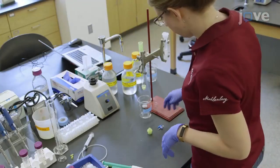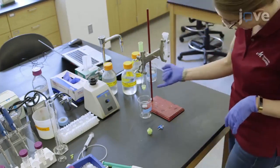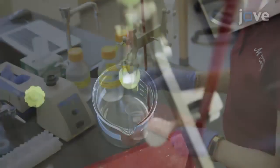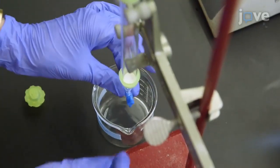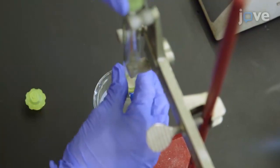To begin this procedure, obtain a 1.5 by 20 cm column equipped with a luer lock outlet, an upper cap that also contains a luer lock fitting, and a lower bed support to retain resin particles. Fit the lower luer lock fitting with a stopcock to control flow.